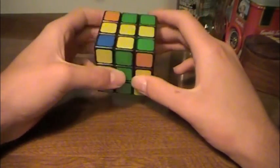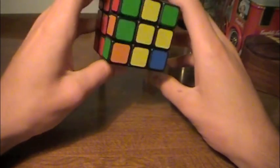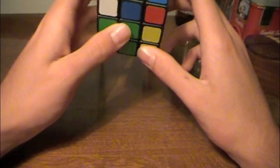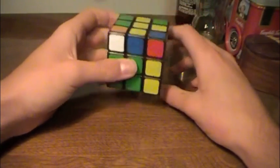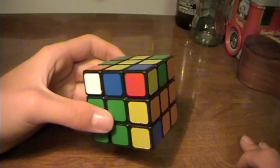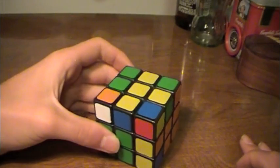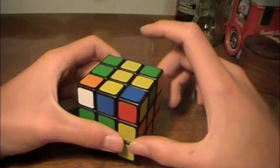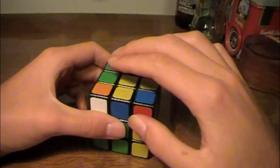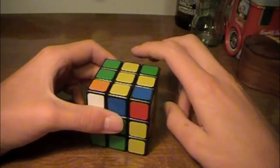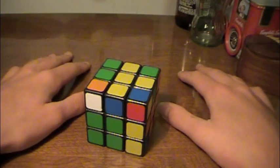So from here, the easiest thing for you to do is to solve the edges. The step right here is to solve all of the edges and two of the corners, leaving three of the corners unsolved.